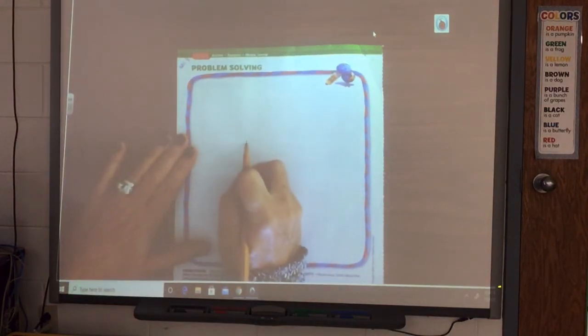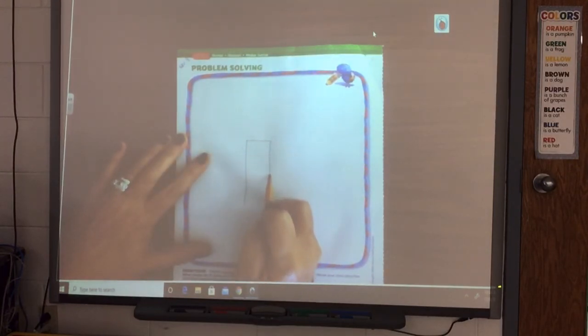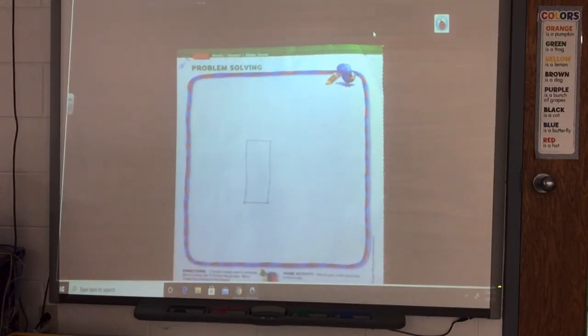All right, so this time I do not have those dots, but I'm still going to try to draw a rectangle. Two short sides, two long sides. It does not have to be perfect. There is my rectangle. Or you can draw one the other way.